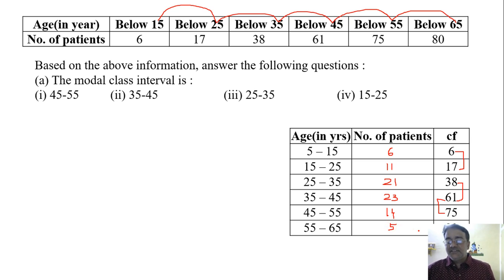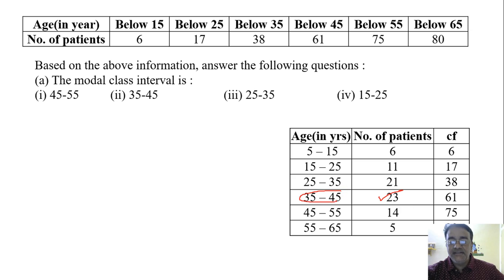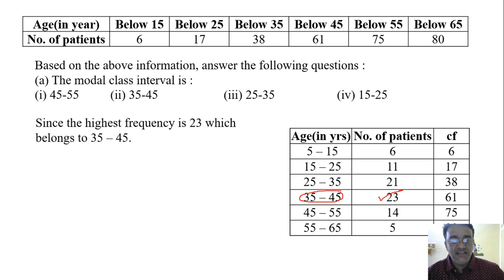Which is the highest frequency here? 23. So 23 belongs to which class? That is the modal class. 23 is the highest frequency and it belongs to 35 to 45, so 35 to 45 is the modal class. Which option is the correct one? Second.